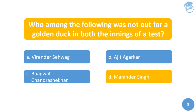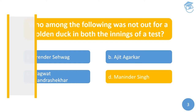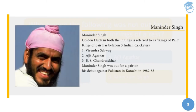The answer is Maninder Singh. A golden duck in both innings is called a 'King of Pair.' Three Indian cricketers — Virender Sehwag, Ajit Agarkar, and Bhagwat Chandrasekhar — suffered a King of Pair. Maninder Singh was out for a pair of ducks on his debut against Pakistan in Karachi in 1982-83, but that was not a golden duck. For more details, refer to quiz number seven, question number two.